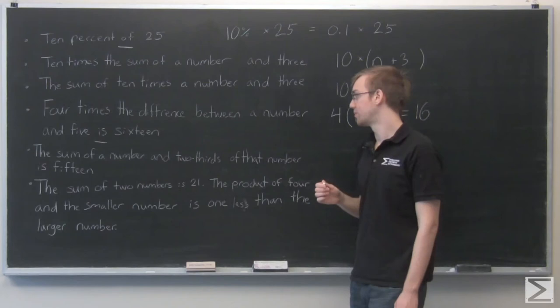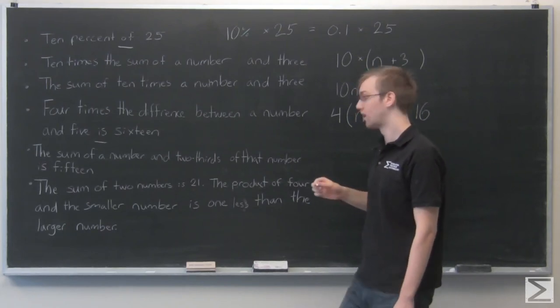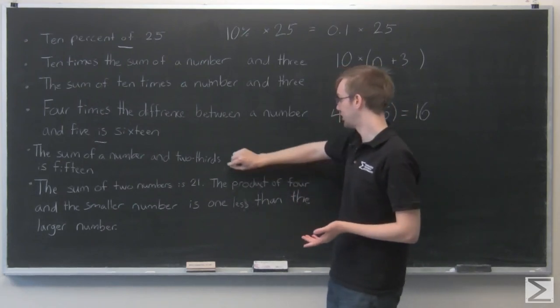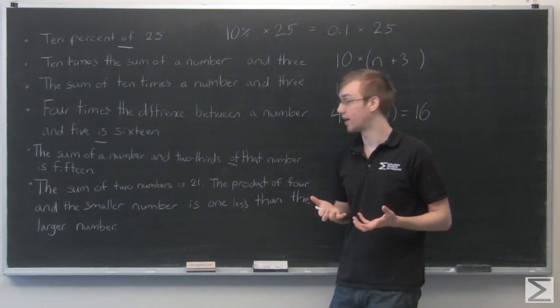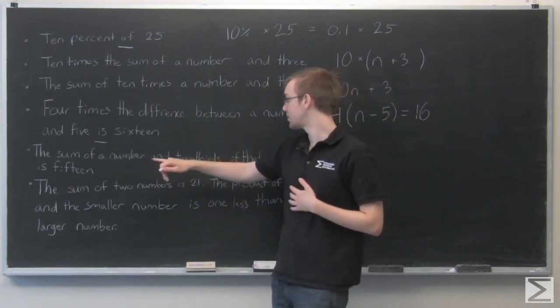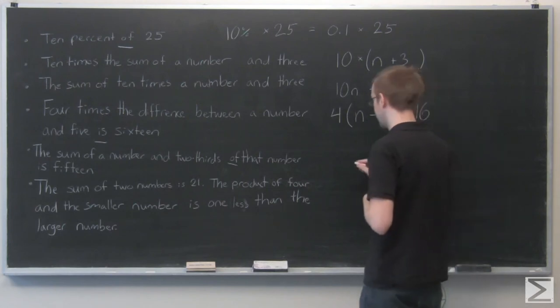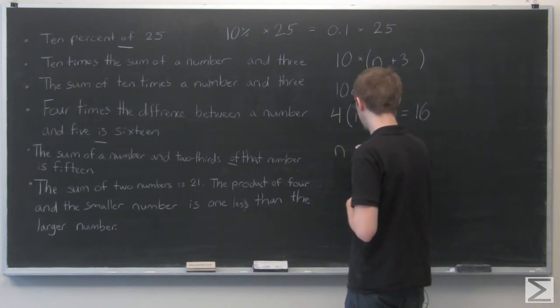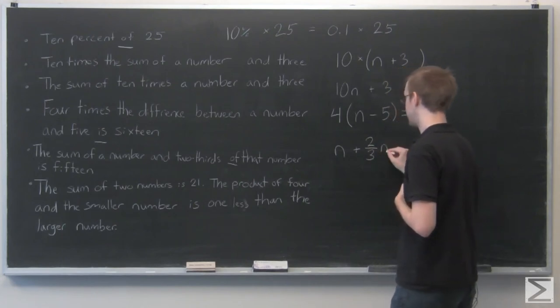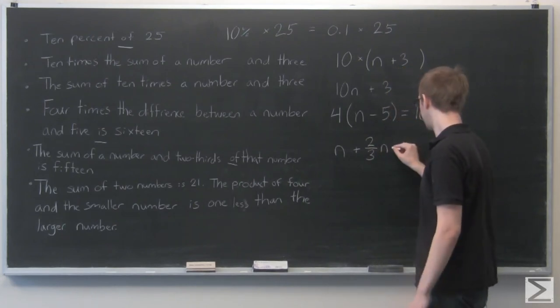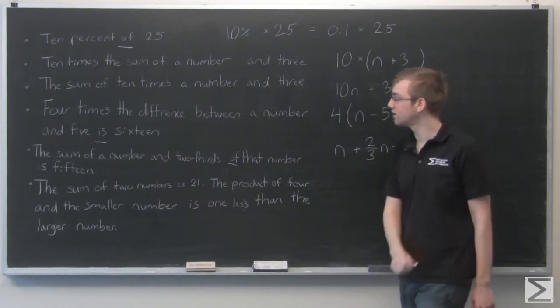The next example is the sum of a number and two thirds of that number is 15. Here I see our keyword 'of' again, and this is another case where 'of' means multiply. Because it's a sum of a number and two thirds of that number, we're using the same number twice. So let's say the number is n added to two thirds of n, so it's two thirds times n, and that is equal to 15.